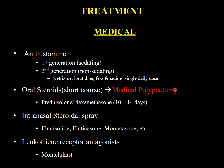Oral steroids reduce the size of the polyp and in many cases shrink it considerably. They should be given for at least 10 to 14 days in short dose, with consideration of contraindications such as uncontrolled or controlled diabetes, hypertension, tuberculosis, or stomach ulcers. Intranasal steroids — fluticasone, mometasone, or similar — should be given for long periods, two to five months. Leukotriene receptor antagonist such as montelukast should also be prescribed.